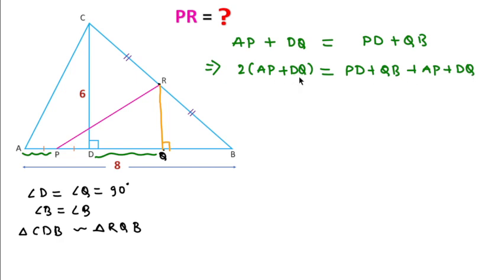This becomes AB, because PD and QB and AP and DQ all combine to form AB. So we can write AP + DQ = AB/2, and since AB is 8, this equals 4. So AP + DQ is 4.